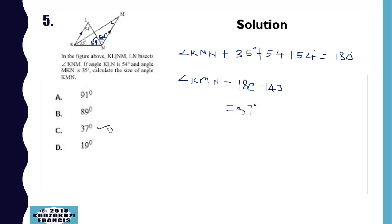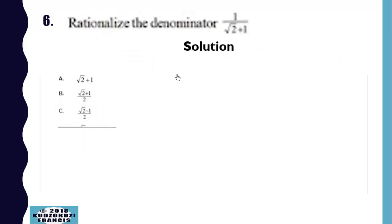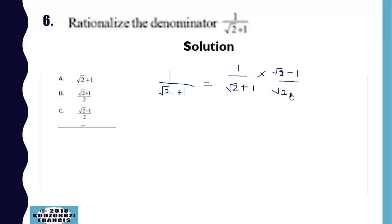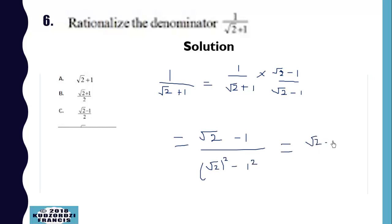Now we are rationalizing the denominator. We have root 2 times (root 2 minus 1) over (root 2 minus 1) over (root 2 minus 1). The top gives us root 2 minus 1, and the bottom is difference of two squares: root 2 squared minus 1 squared. This gives us (root 2 minus 1) all over 1.